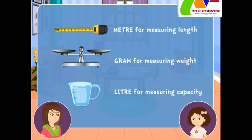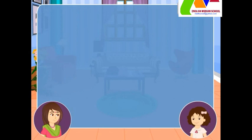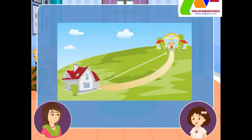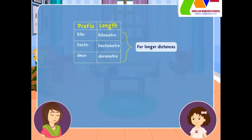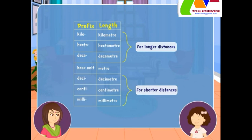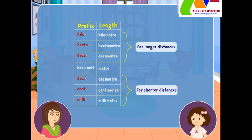Then we must have measured the length in meters. For longer distances, we use measures formed by adding prefixes like kilo, hecto, and deka to the basic unit. And for shorter distances, we use prefixes like deci, centi, and milli to the basic unit. These prefixes are multiples of ten.